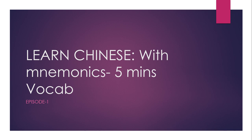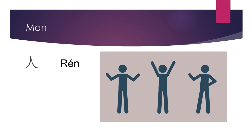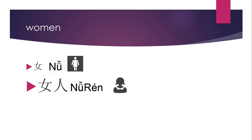Let's start. The first word we are going to focus on is 'man.' The character is pronounced as rén. As you can see, this character has two legs, which is similar to the picture shown here. Think about it — it looks like a man.